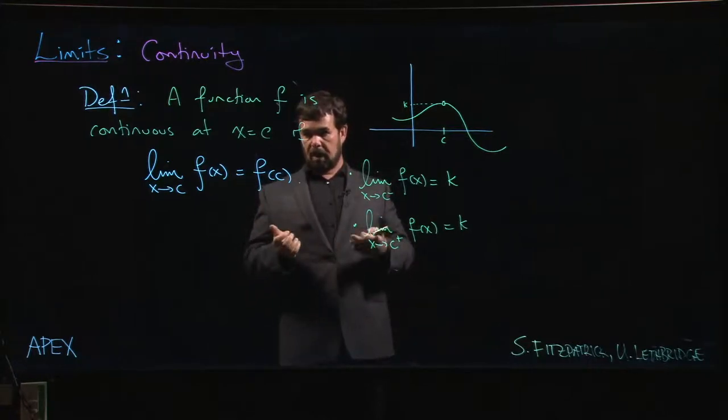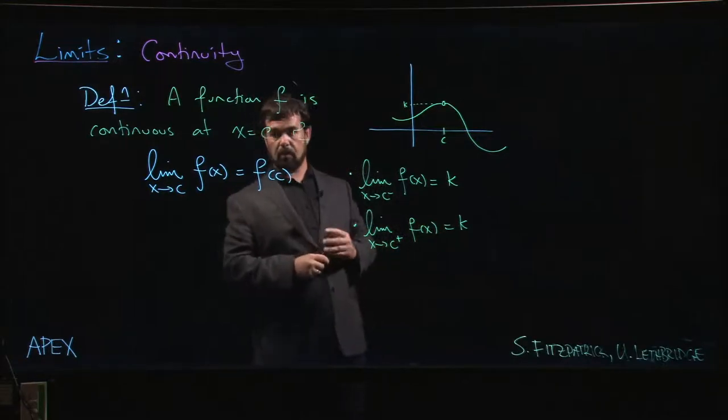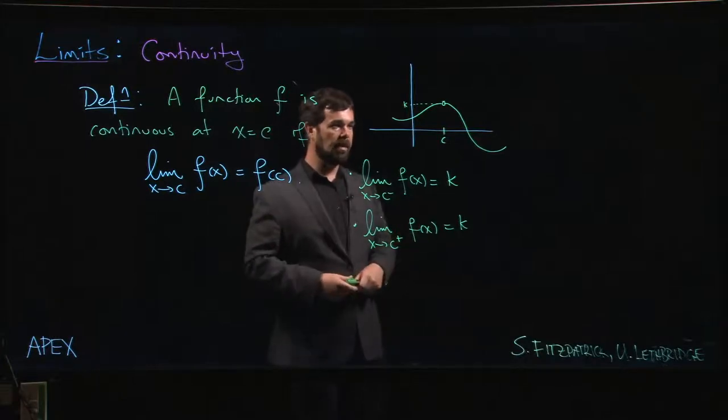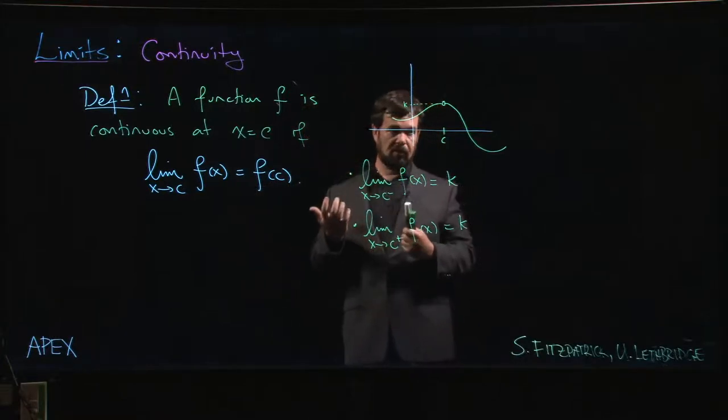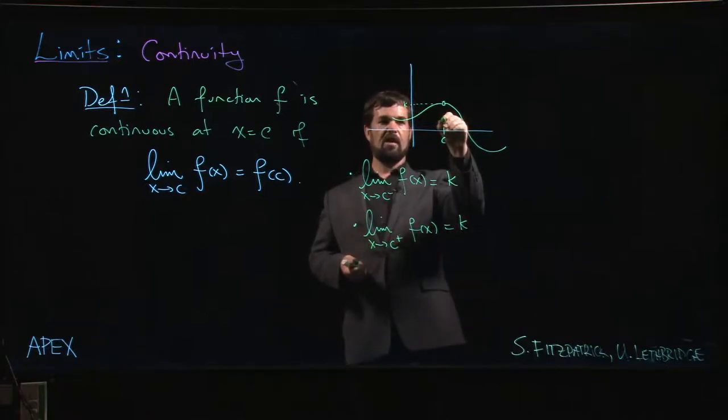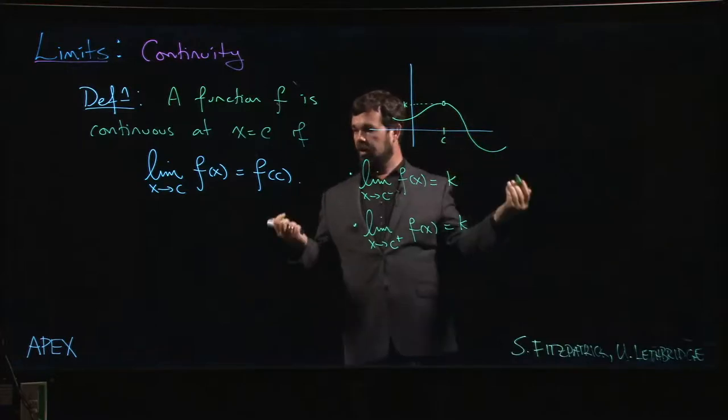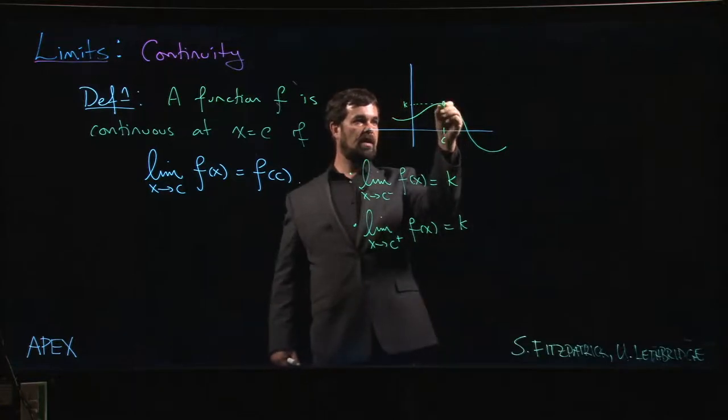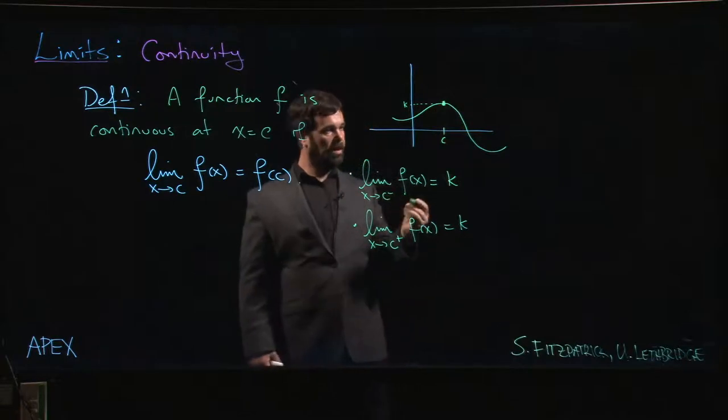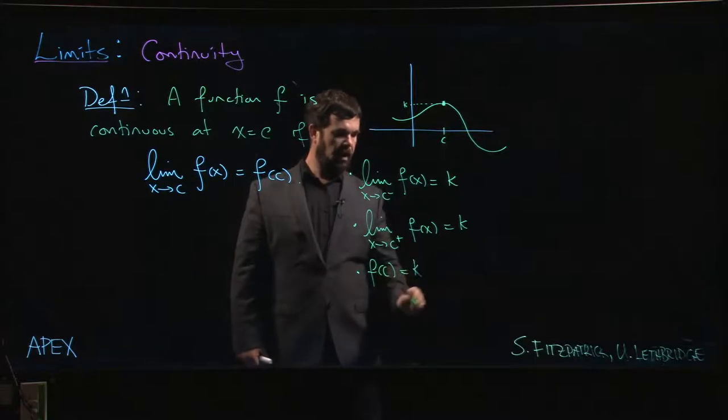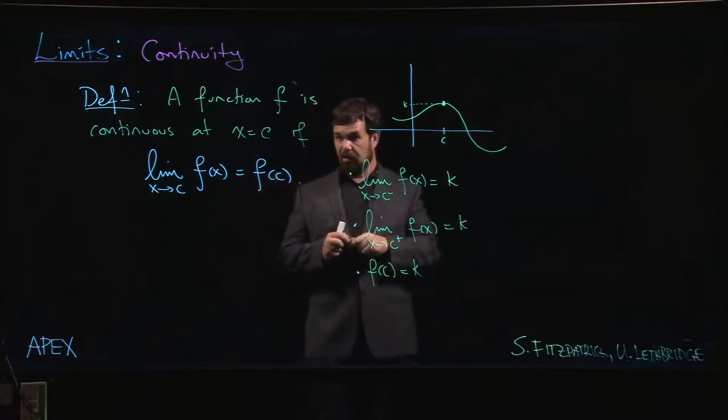Continuity has this extra requirement that the limit has to agree with the value of the function at that point. This comes back to the direct substitution property that we saw when we were looking at analytic methods for limits. Continuity means that the limit can be evaluated by direct substitution. But things could go wrong—it could be that f of c is defined at some other value. Saying that your function is continuous means that this hole we have right now, you can plug that hole.